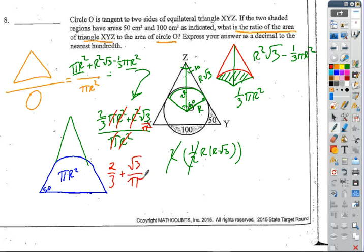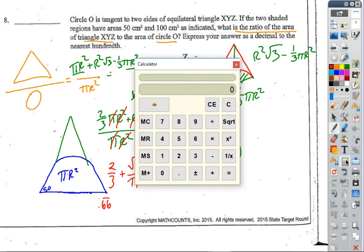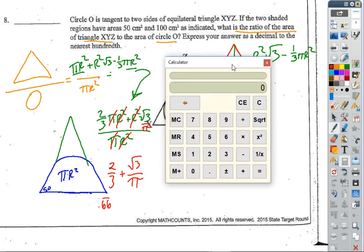Well, 2/3 is 0.66 repeating. But I don't know what this is off the top of my head. So luckily we're allowed to use a calculator. So I'm going to pull this up. I'm going to say √3, and I'm going to divide it by π. And so I get 0.55. And it says to the nearest hundredth, so I don't need to go any further.